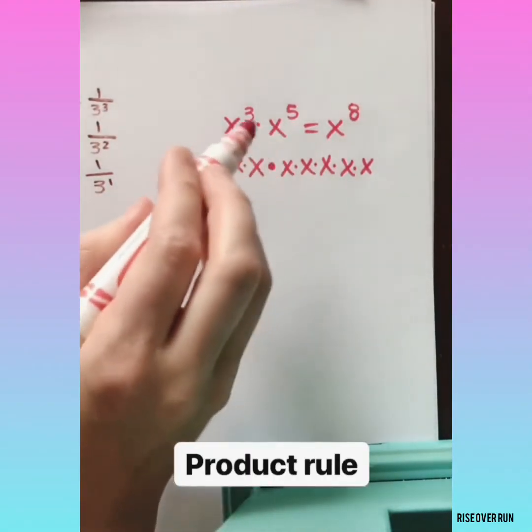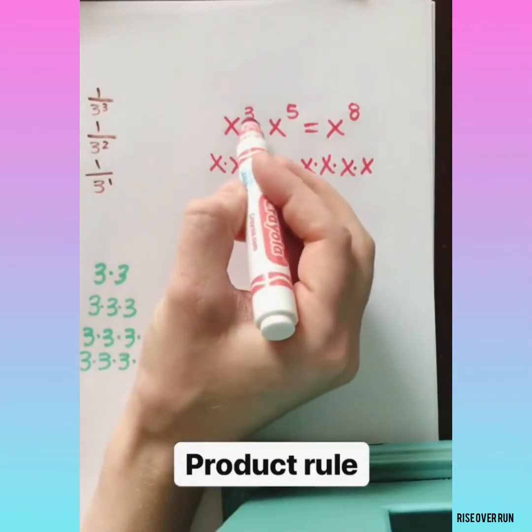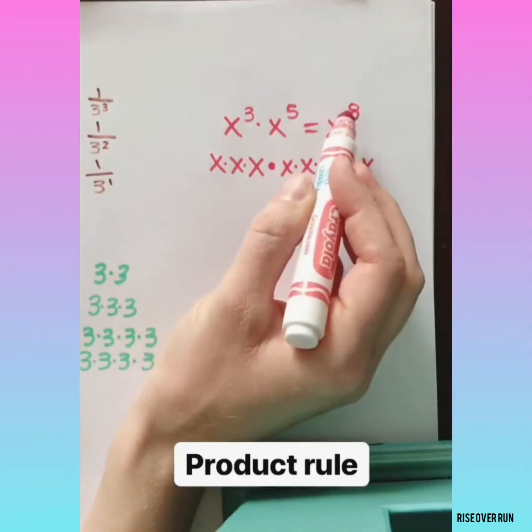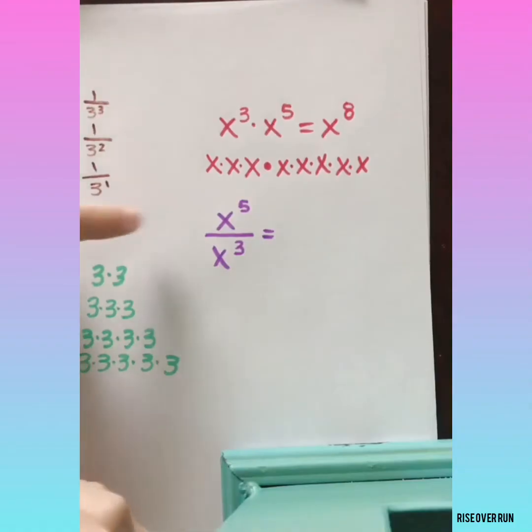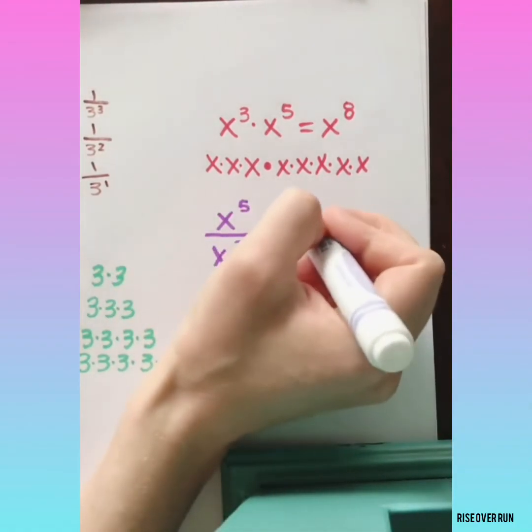Once you see this pattern, you can use a shortcut here and just add these exponents. Let's look at when we're dividing with exponents. Again, let's expand it to see what happens.